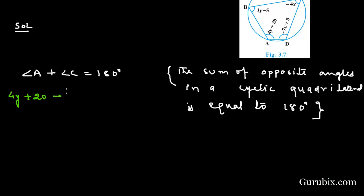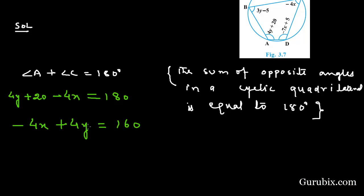Angle C is -4x, and their sum equals 180. Writing this out: -4x + 4y = 160, since 20 is deducted from 180. Dividing both sides by -4, we get x - y = -40. This is equation number one.